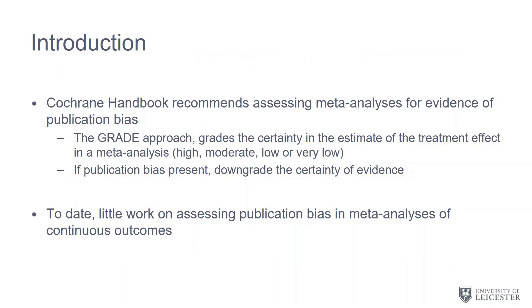Indeed, the Cochrane Handbook goes on to recommend that we assess meta-analyses for evidence of publication bias and that we also use the GRADE approach. A meta-analysis of randomized controlled trials starts with high certainty of evidence but it can be downgraded for the presence of publication bias as well as for other reasons such as risk of bias, inconsistency, indirectness, and imprecision.